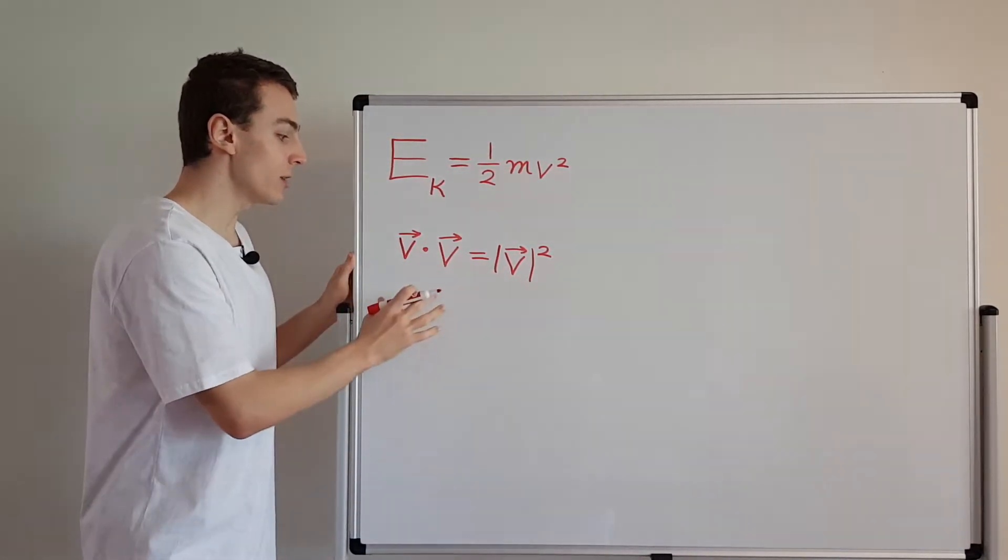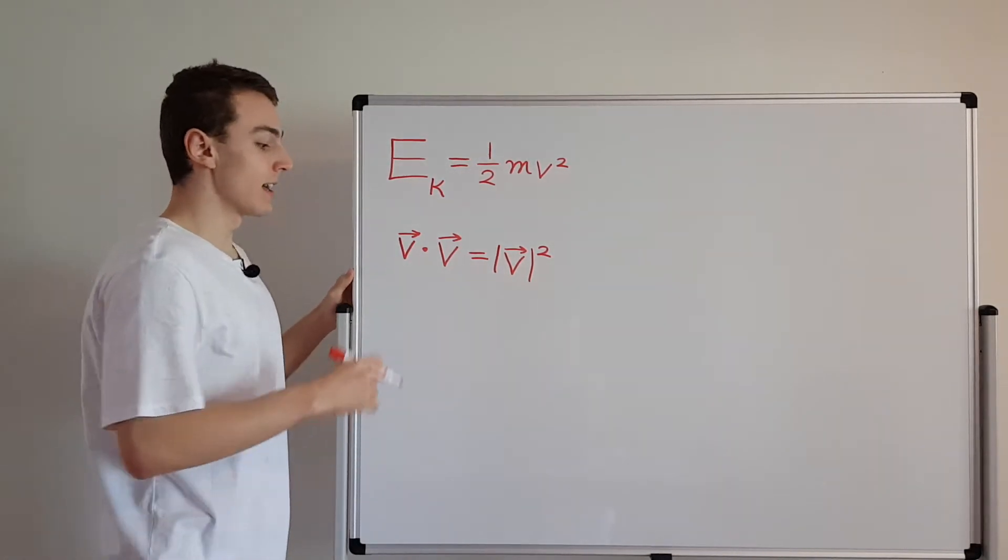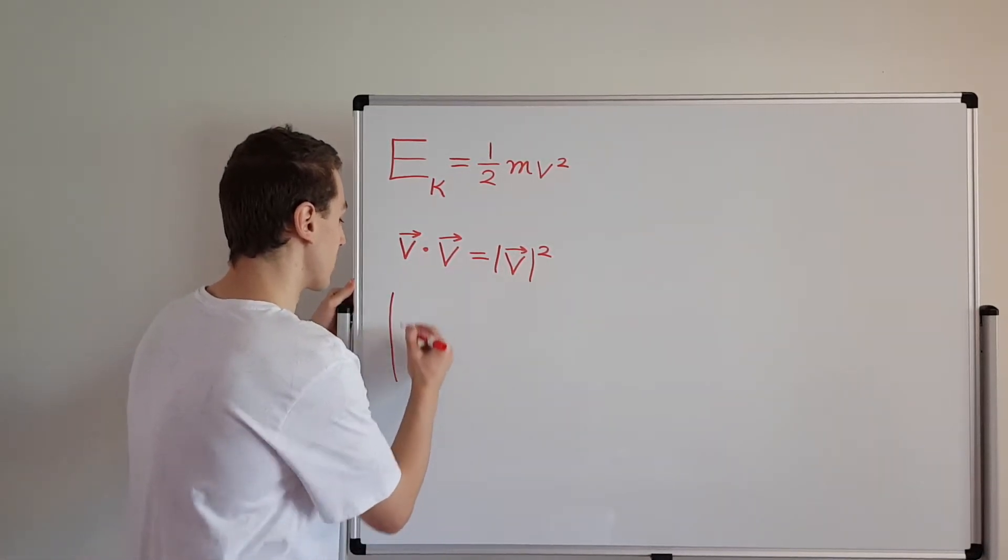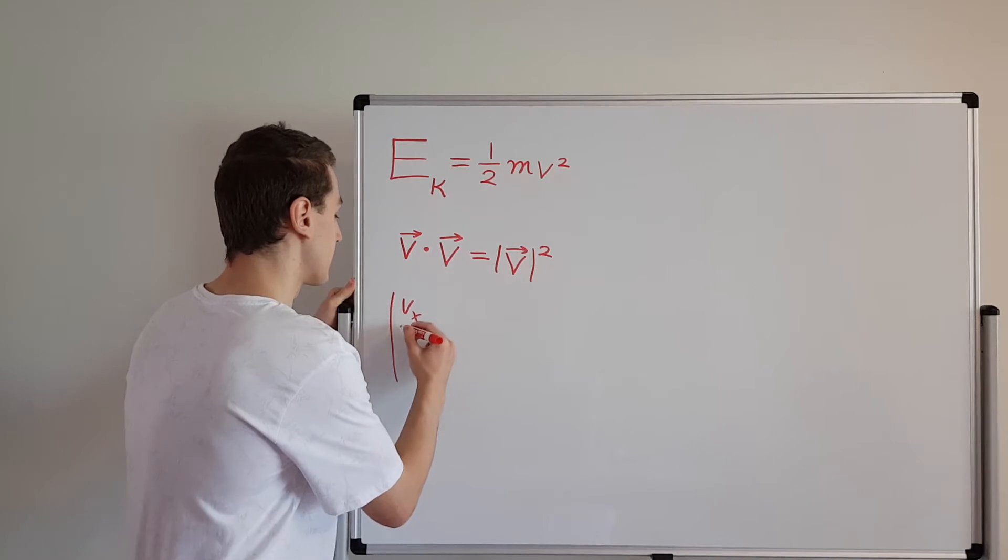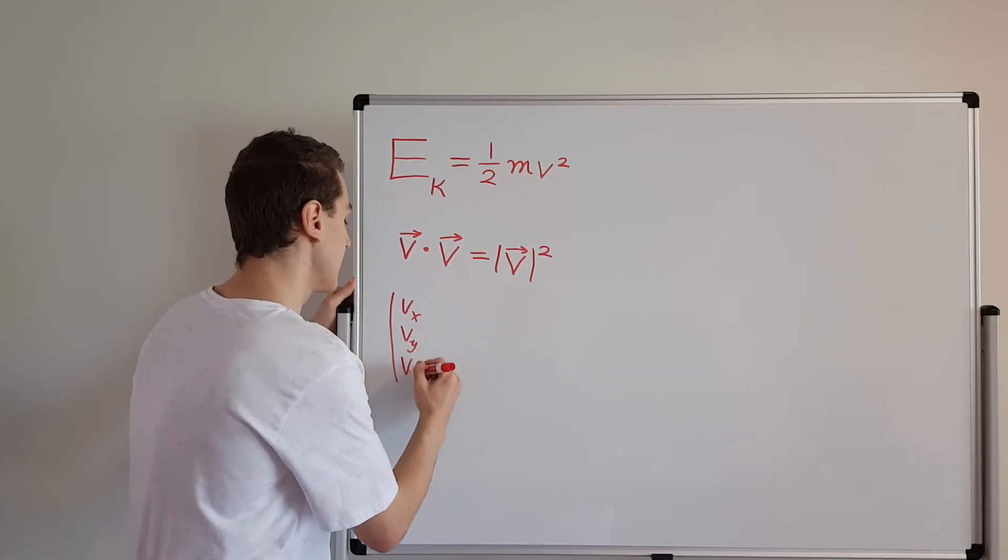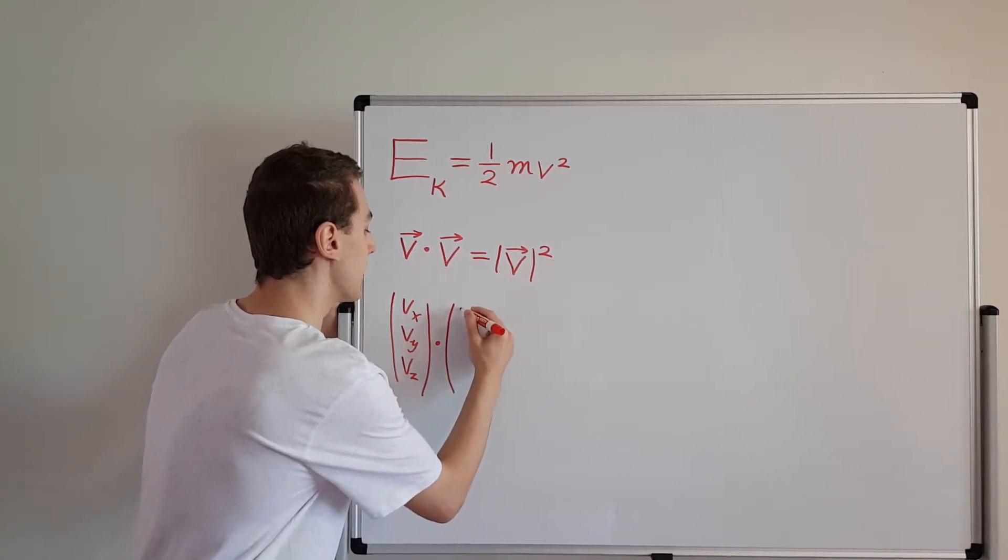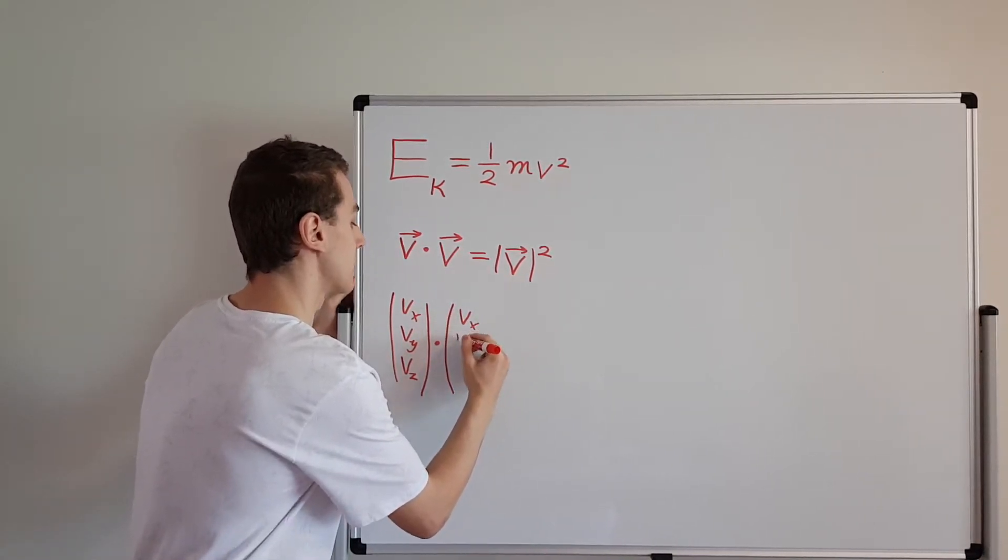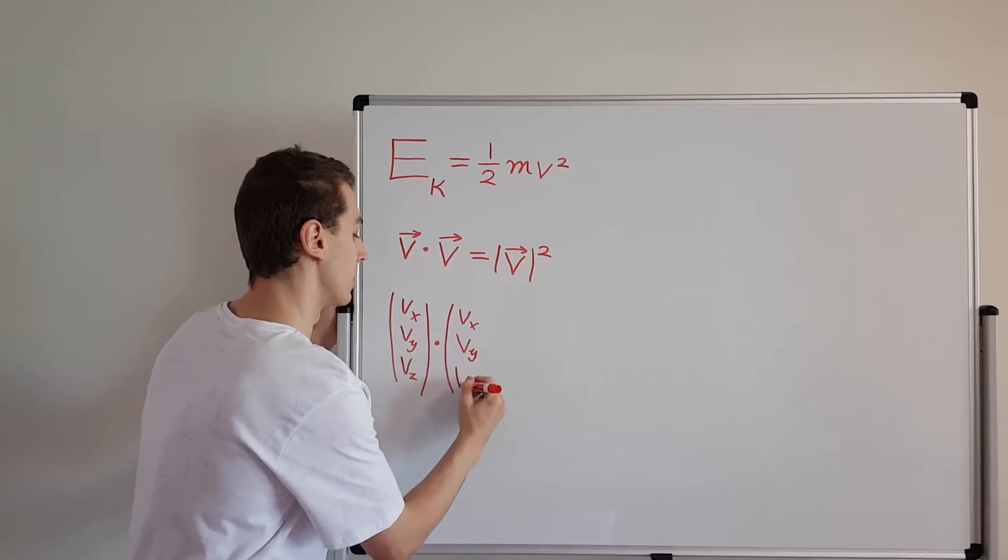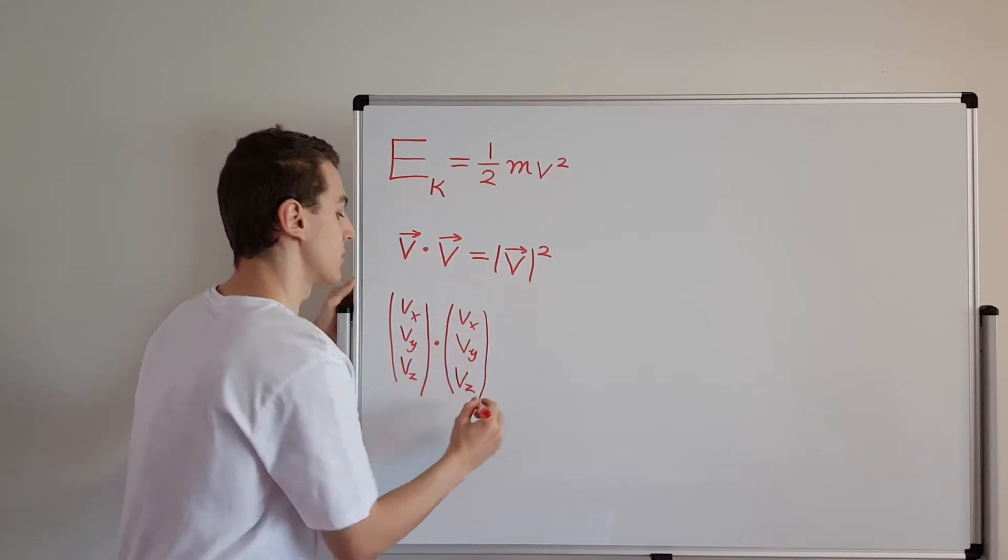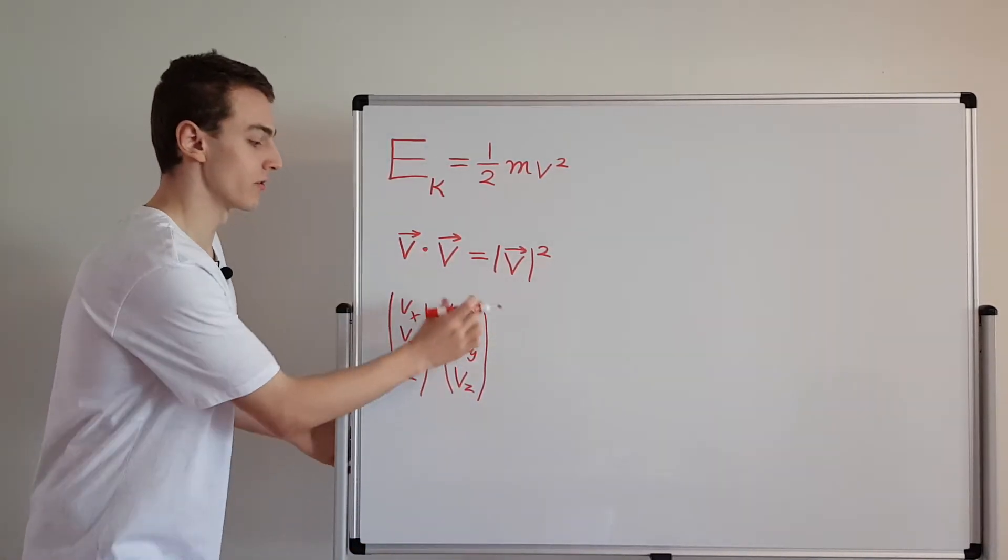Because what you're effectively doing is you're taking a vector which could be three-dimensional—Vx, Vy, Vz with three components—and you're dotting that with itself: Vx, Vy, Vz. I'm representing them as two column vectors over here with three components. You can reduce this to a two-dimensional plane or even just one-dimensional motion.